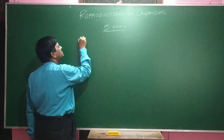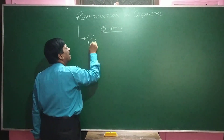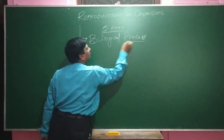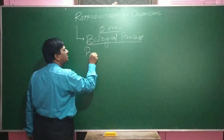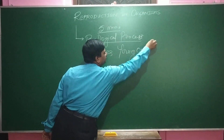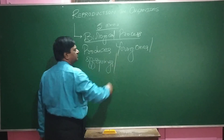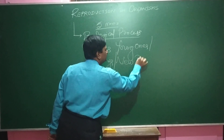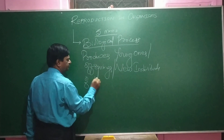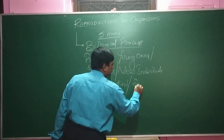First, we are going to see what is reproduction. Reproduction is nothing but a biological process where it produces young ones — new individuals of its own kind, or we use the words 'same type.'